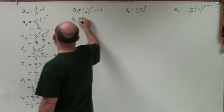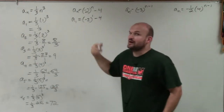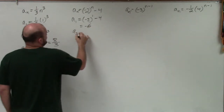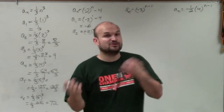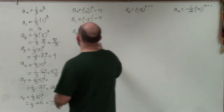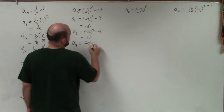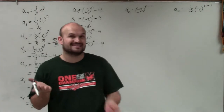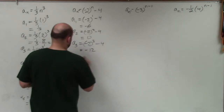Now let's move on to the next one. All we're simply going to do is plug in 1. I have negative 2 raised to the first power minus 4. Negative 2 to the first power is still just negative 2. Minus 4 equals negative 6. A sub 2 equals negative 2 squared minus 4. When you take a negative number and square it, it becomes positive — negative 2 times negative 2 is positive 4. So positive 4 minus 4 equals 0. A sub 3 is negative 2 to the third power minus 4. Since the exponent is odd, the result is negative — negative 2 cubed is negative 8. Negative 8 minus 4 is negative 12.